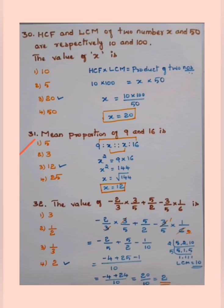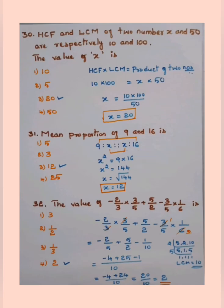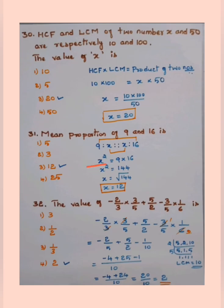Next: find the mean proportion of 9 and 16. Let the mean proportion be x. Set up the proportion: 9 : x = x : 16. The product of the means equals the product of the extremes, so x² = 9 × 16 = 144. Taking the square root: x = 12. Alternatively, √9 = 3 and √16 = 4, so x = 3 × 4 = 12. Option 3, 12, is the correct answer.